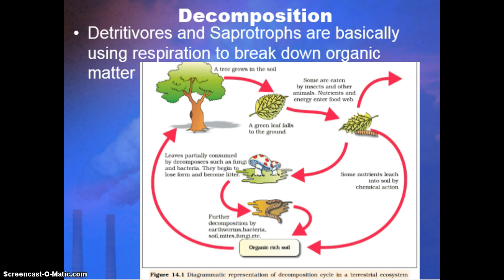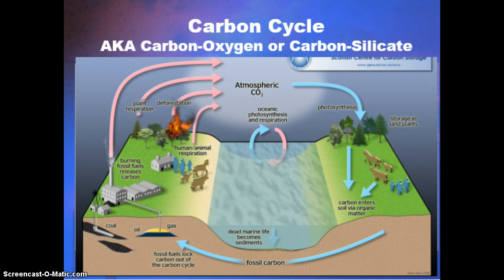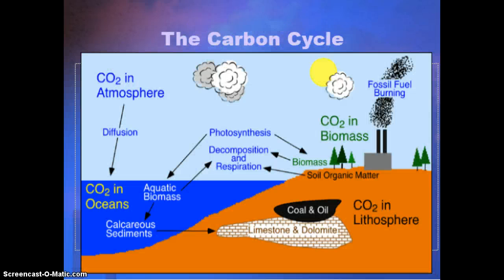This is a very simplified sketch of the carbon cycle. It's a very complex cycle — all of life depends on it, and it involves all kinds of dead and abiotic materials that contain carbon. Here's just another way of showing it in simplified form, and then we'll get into more detail.